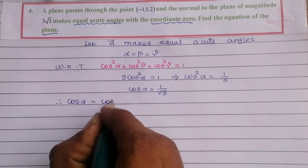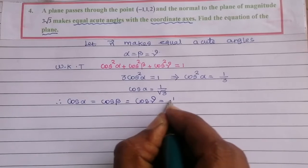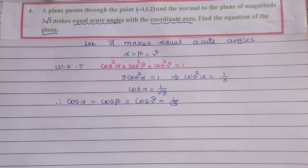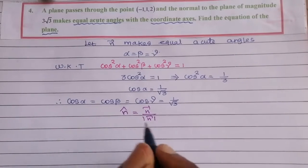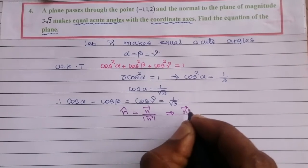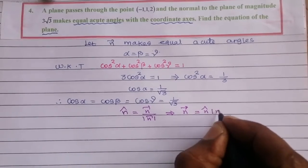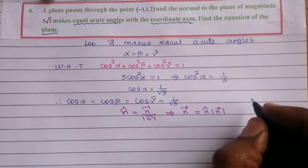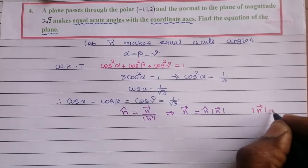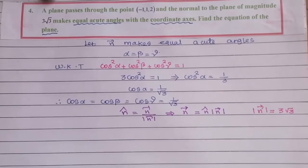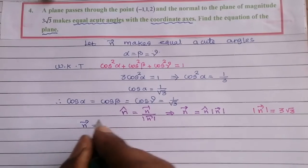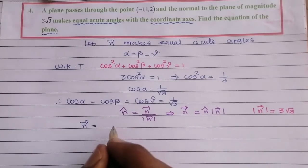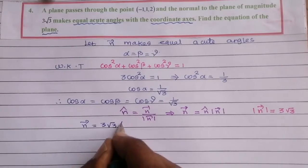Therefore cosα = cosβ = cosγ = 1/√3. Now, if we have n-hat, we can write n-vector equal to n-hat times the modulus of n-vector. So the modulus of n-vector times n-hat.